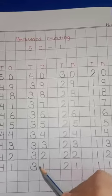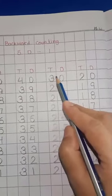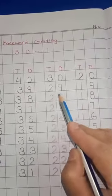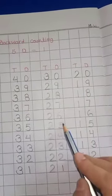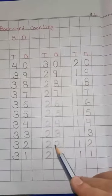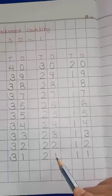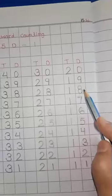32, 31. Now next is 30, 29, 28, 27, 26, 25, 24, 23, 22, 21. Next is 20, 19.